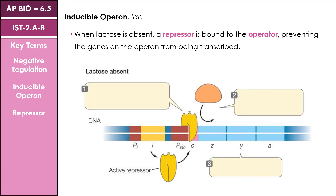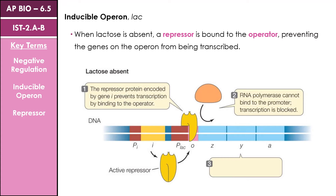We'll be starting with our inducible operon, the typical example being our lac operon. Lac operons are used to create proteins necessary for breaking down lactose. When lactose is absent, a repressor is bound to our operator region and this prevents the binding of our RNA polymerase. Transcription is blocked and we do not produce any proteins. So when no lactose is present, we do not produce any proteins necessary for breaking down lactose.